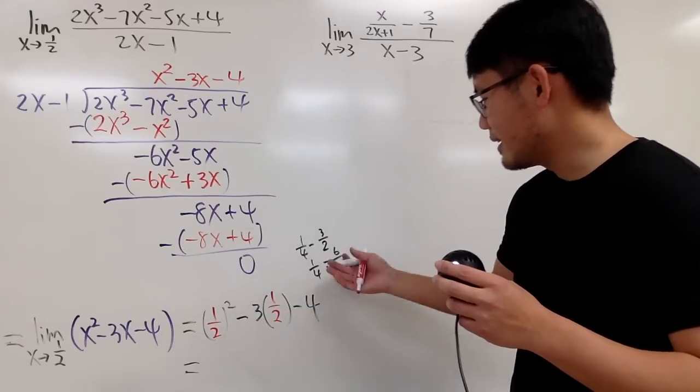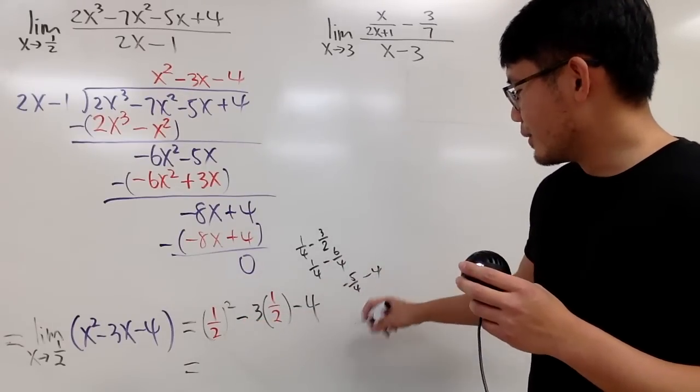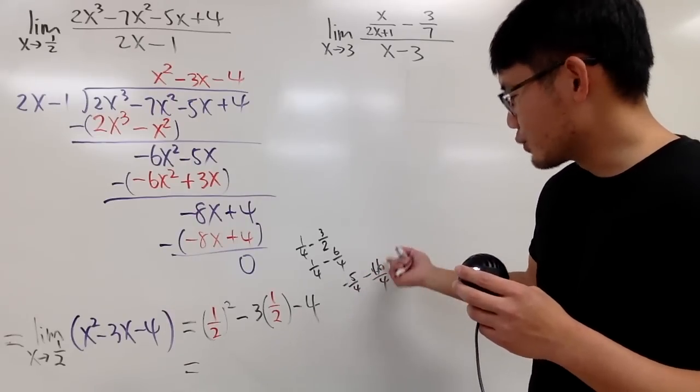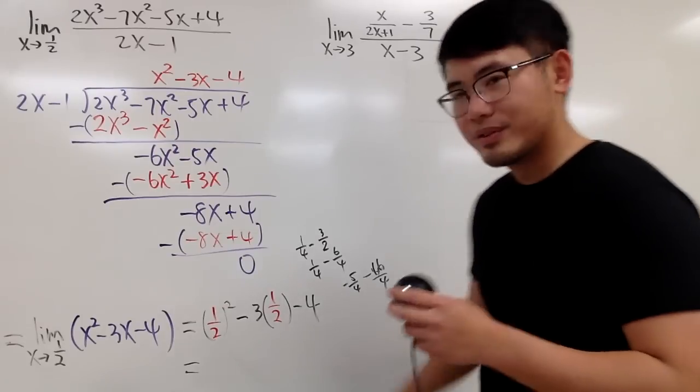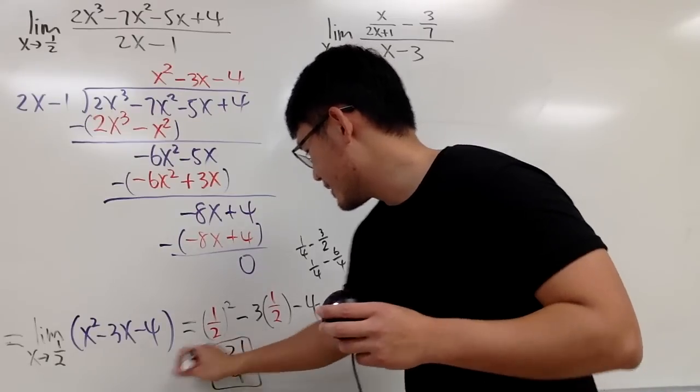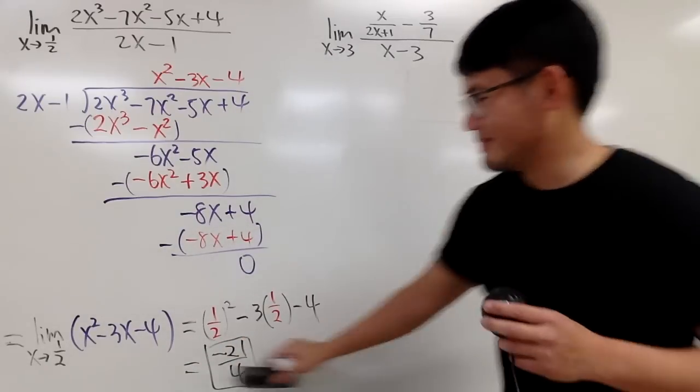So, negative 5 over 4, right? And then, minus 4, which is same thing as minus 16 over 4. So, this and that is minus 21, yeah, over 4. So, just do the fraction on your own. Right? Right. Now, another one right here.